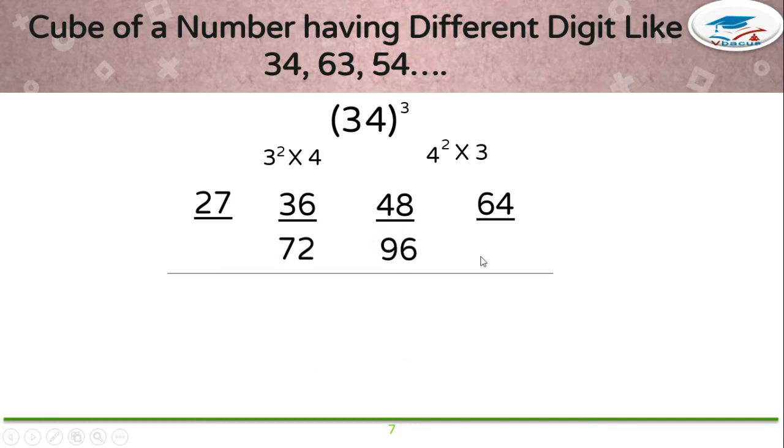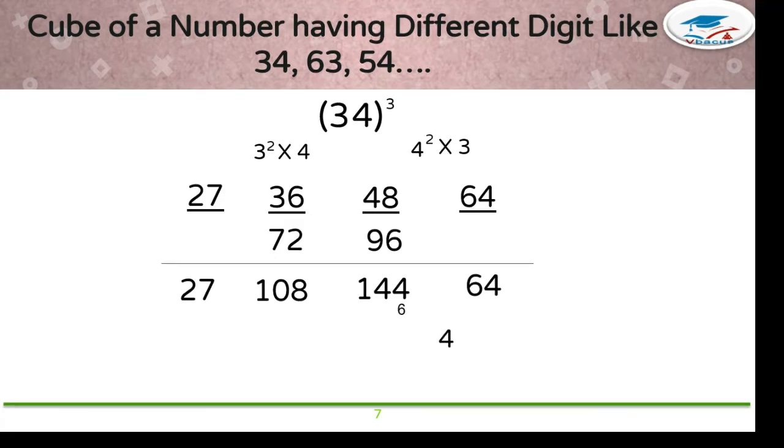Add that. 64 as it is. 48 plus 96 is 144, 36 plus 72 is 108. Write 27 as it is. And take unit number of every number. Write 4. Take 6. Take 6 to 144.